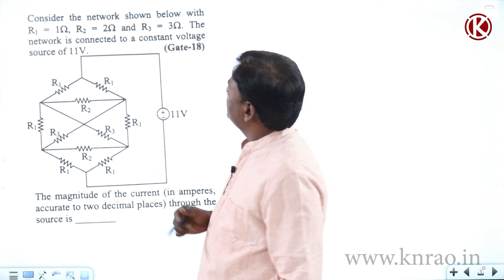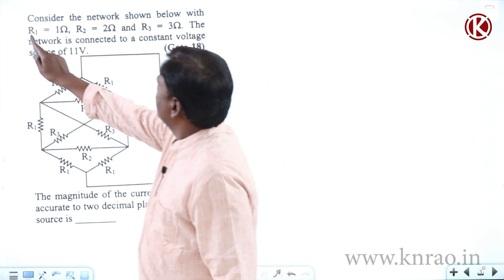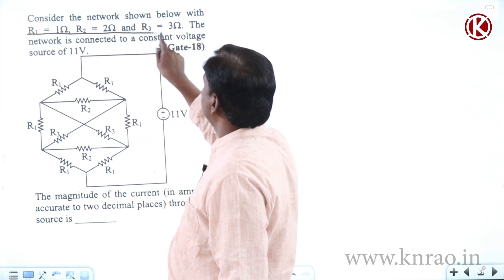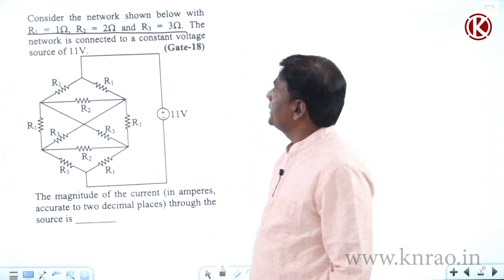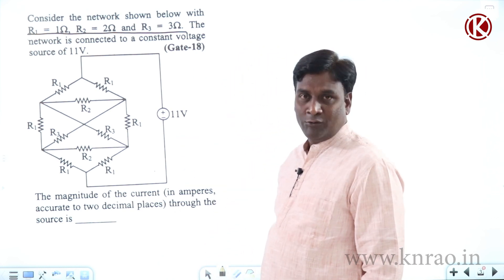Let's see this problem. Consider the network shown below with R1 equal to 1 ohm, R2 equal to 2 ohm, R3 equal to 3 ohm. The network is connected to a constant voltage source of 11 volts.